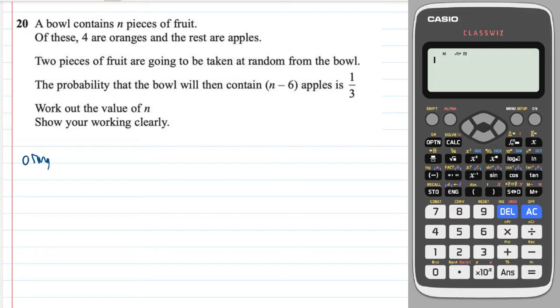So we know that there are four oranges and we know the number of apples will be n minus four, because the total number take away the four oranges.